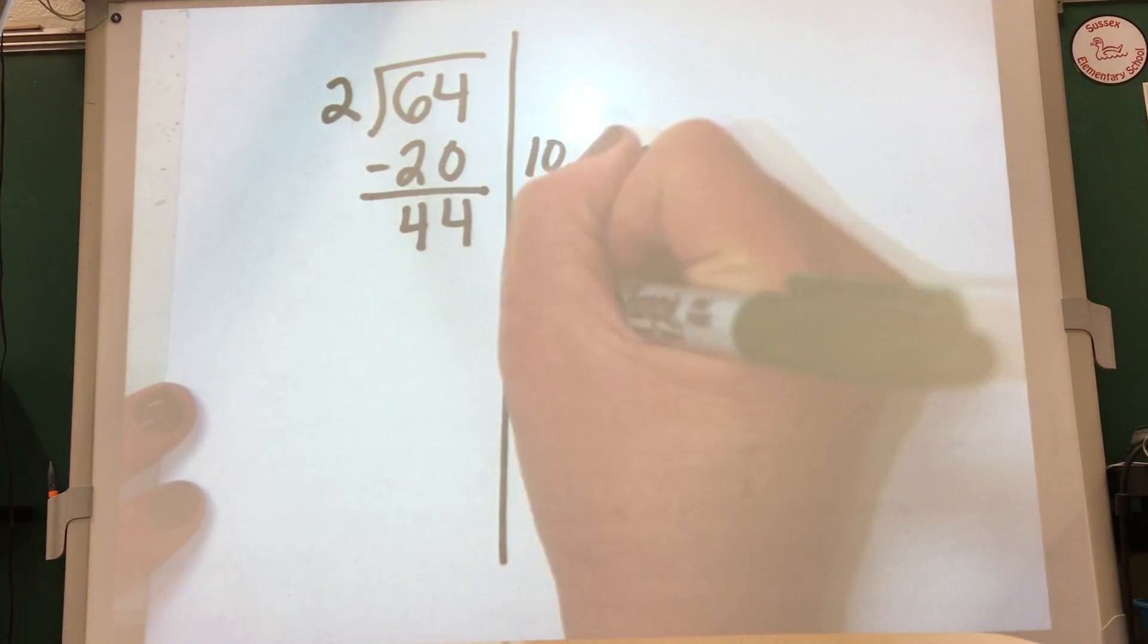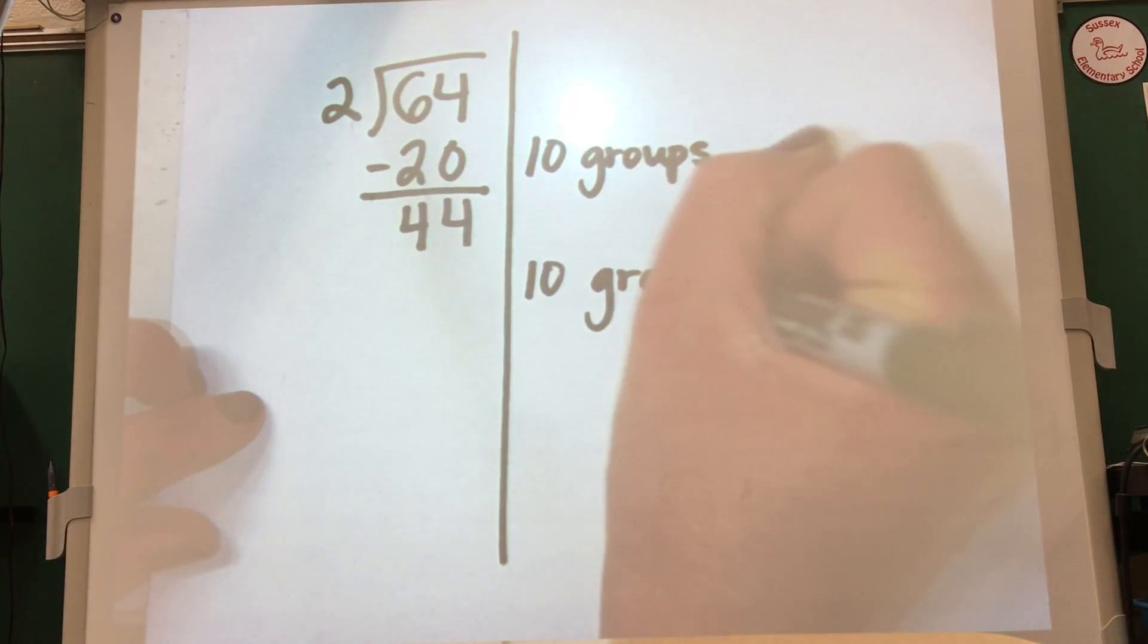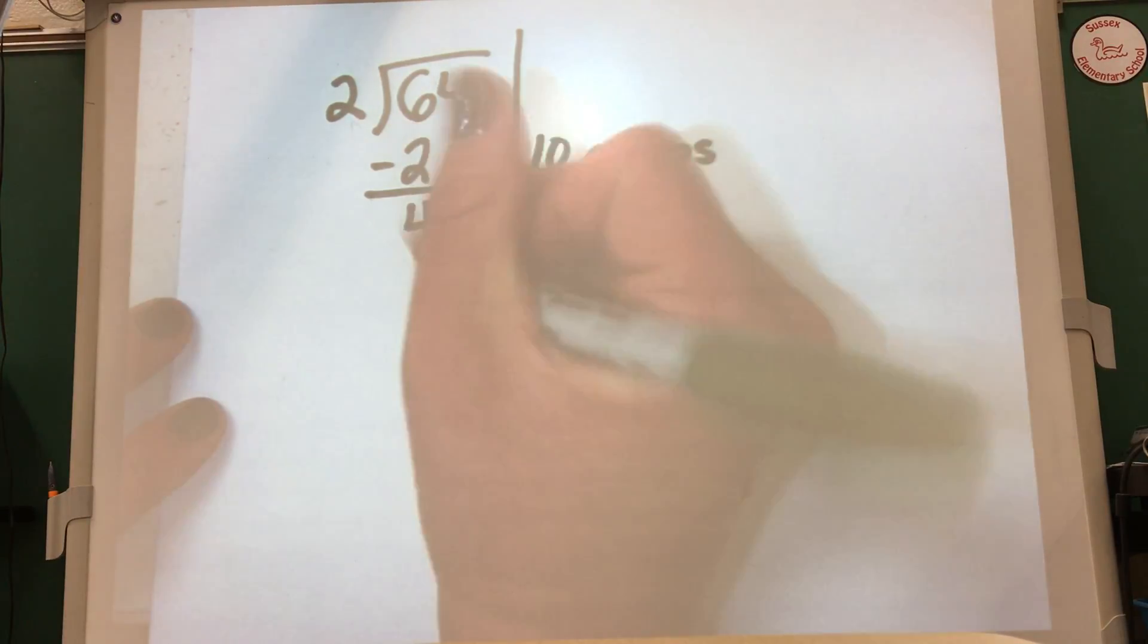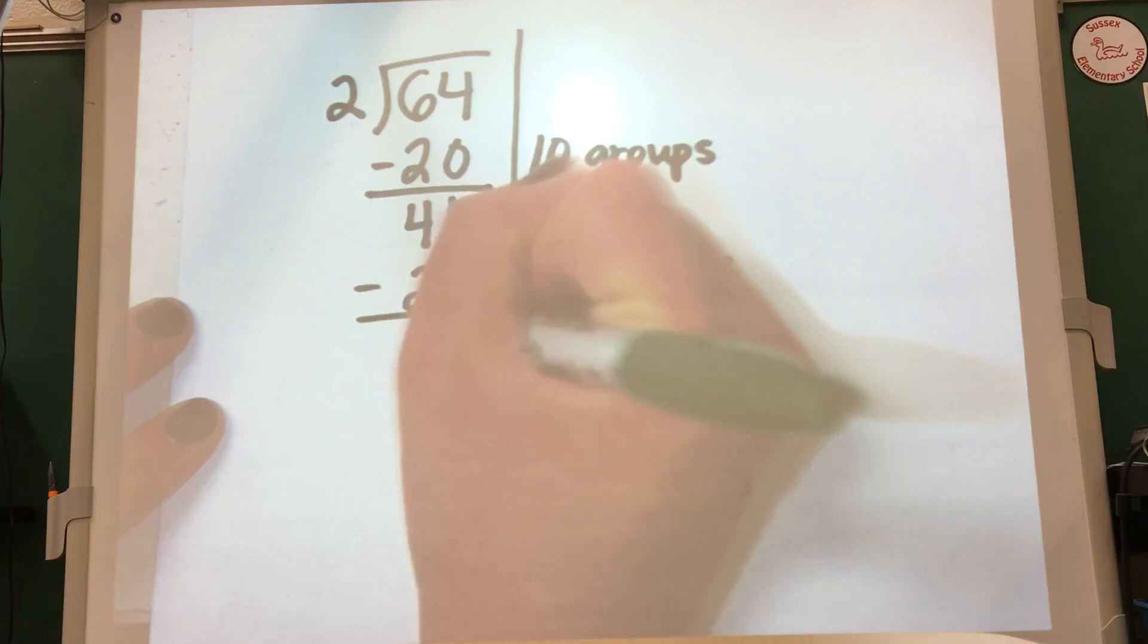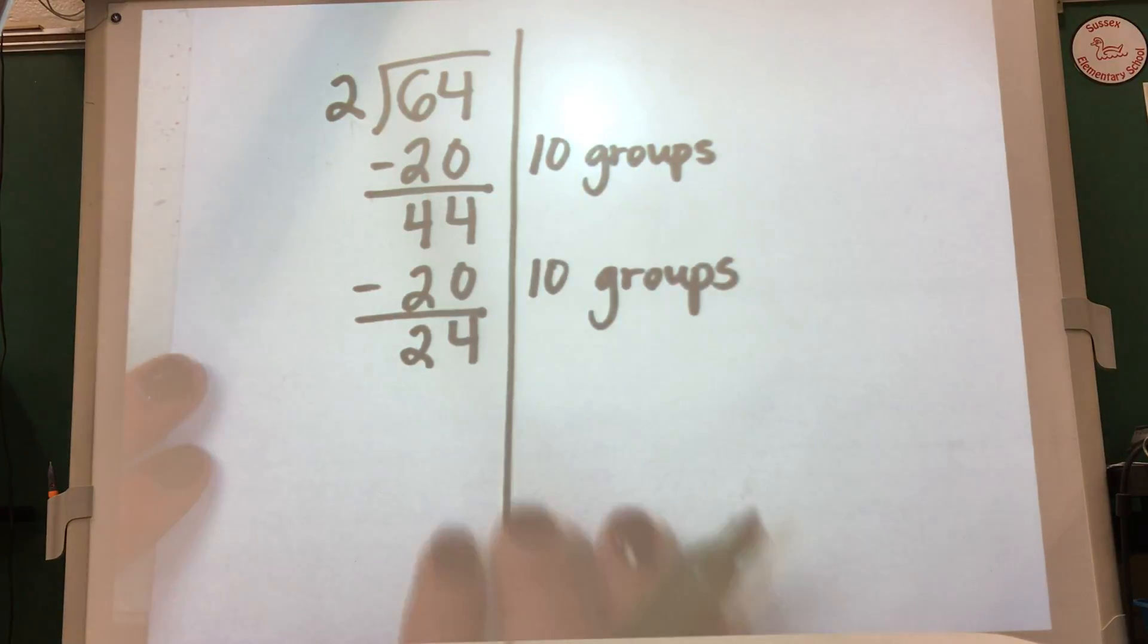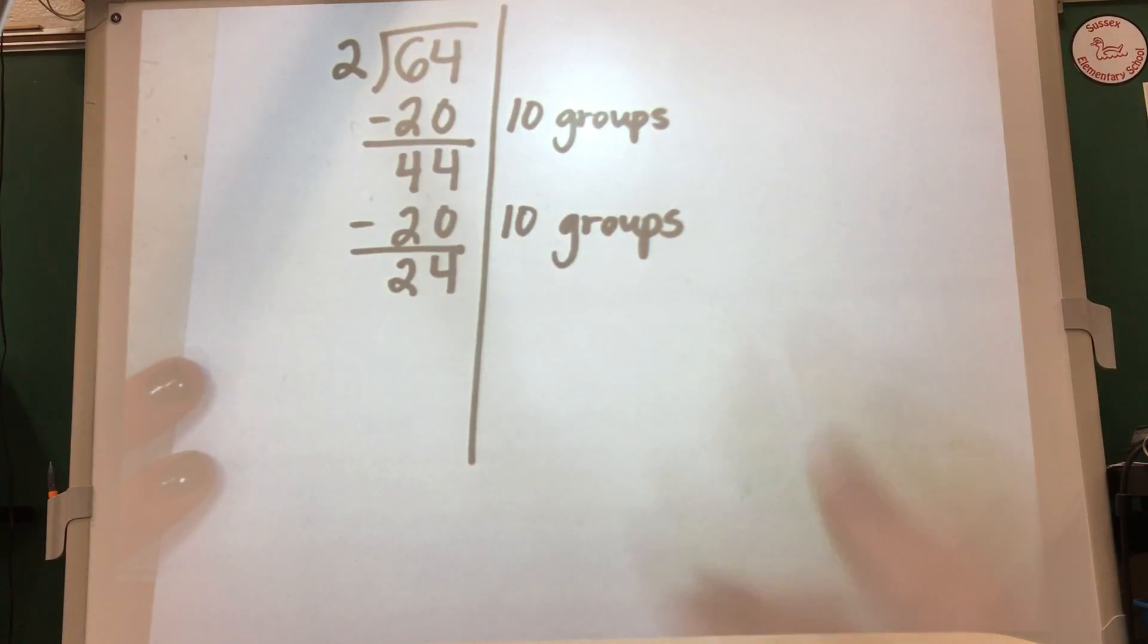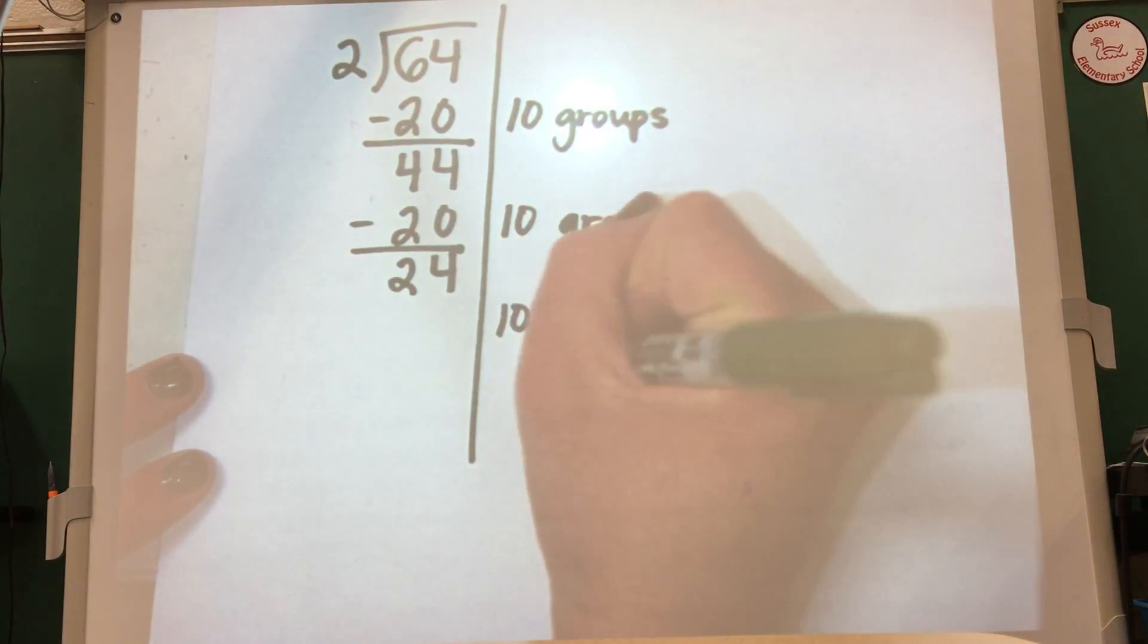Now I have room in 44 to pull out another 10 groups of 2. 2 times 10 is another 20. I'm going to write 20 right here next to this 10 groups and I'm going to subtract that out as well. Again, our goal is to get down to 0. I have 24 left. I can pull out another 10 groups. 2 times 10 is 20.